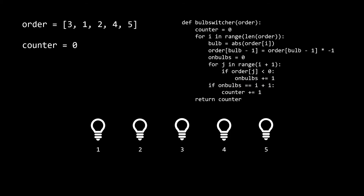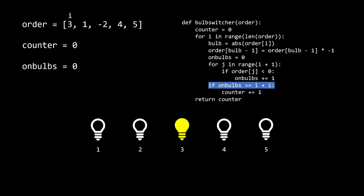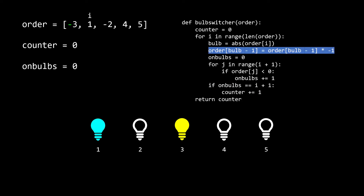Let's run through a few iterations of the brute force solution. On the first iteration, we turn on light bulb 3 by marking it negative. The inner j loop iterates once and finds the first bulb is not turned on, so on_bulbs is 0. Since i+1 is 1 and that doesn't equal 0, the if statement fails. For the next iteration, the first light bulb is turned on and marked negative. The j loop runs over the first and second bulb — only the first is on, so on_bulbs is 1. i+1 is 2, so the if statement fails again.